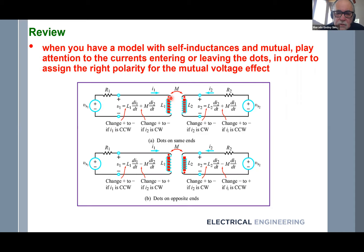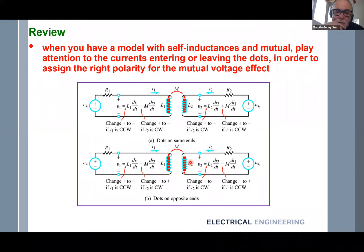You pay attention to the dots. Current I1, the primary, enters the dot. Current I2 also enters the dot. So because both I1 and I2 enter the dot, the mutual effect will be positive. In the other circuit, current I1 enters the dot but current I2 enters the non-dot — it leaves the dot — so the currents are reversed in polarity and the mutual effect is negative.